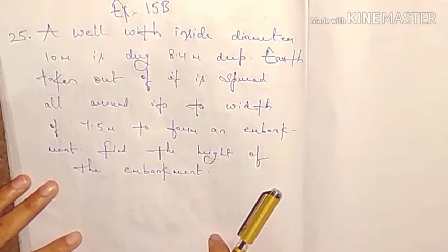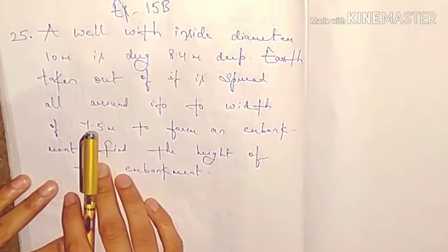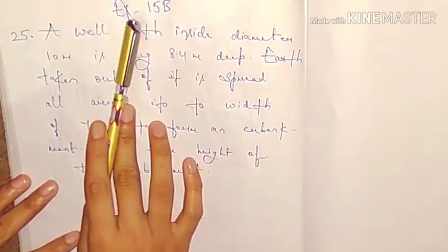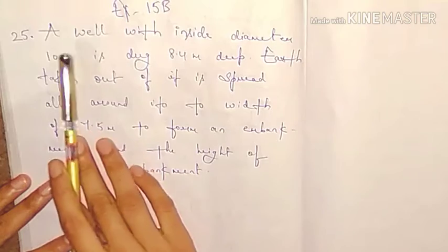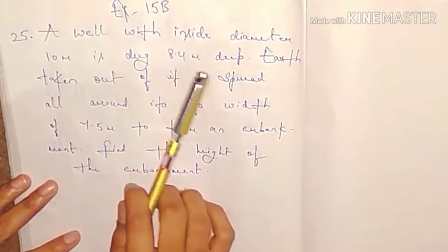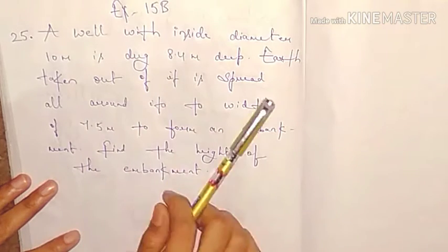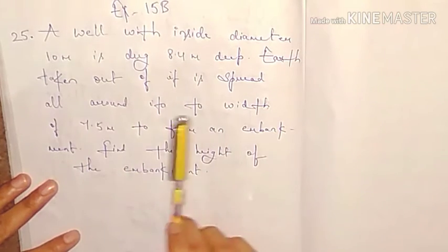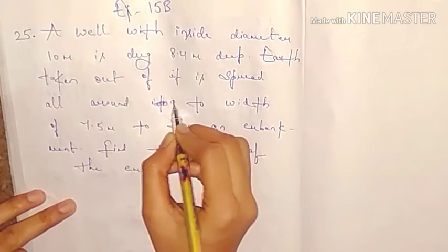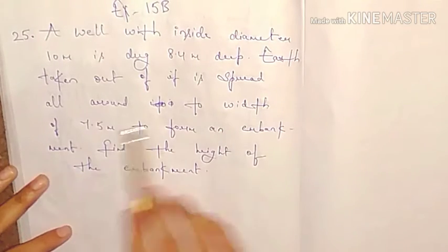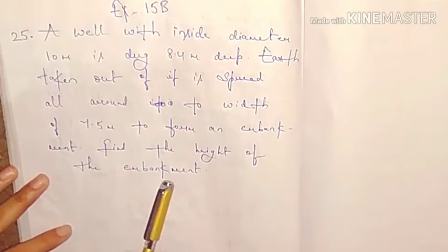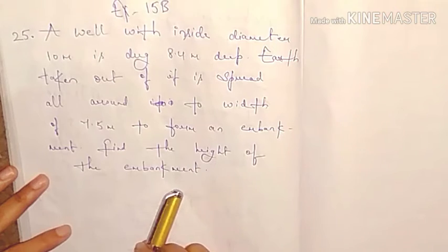Hello students, welcome back to my channel e-learning accounts and maths. Today I am covering question number 25 of exercise 15B, that is volume and surface area of solids. The question: a well with inside diameter 10 meters is dug 8.4 meters deep. Earth taken out of it is spread all around to a width of 7.5 meters to form an embankment. Find the height of the embankment.